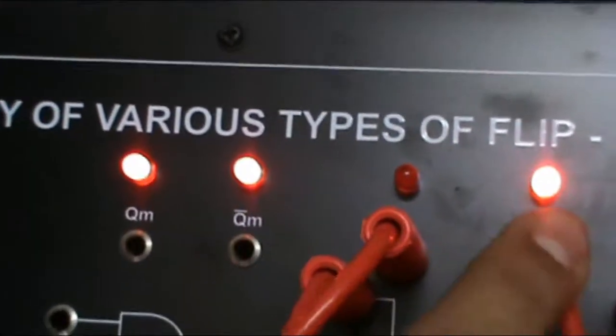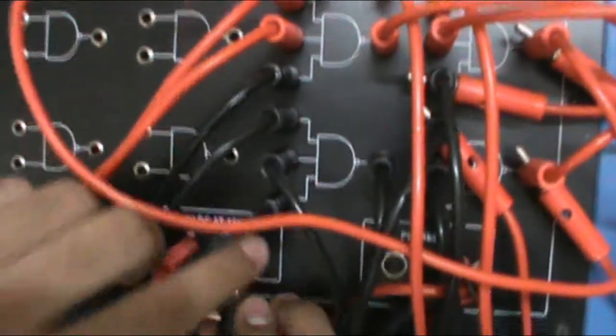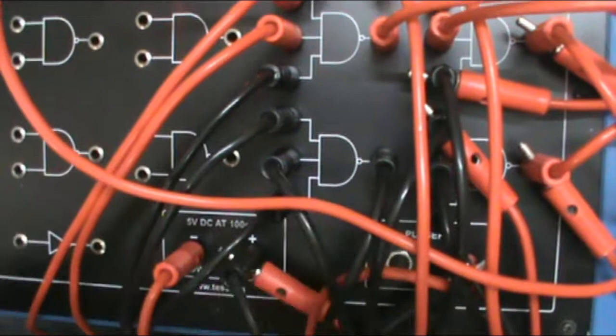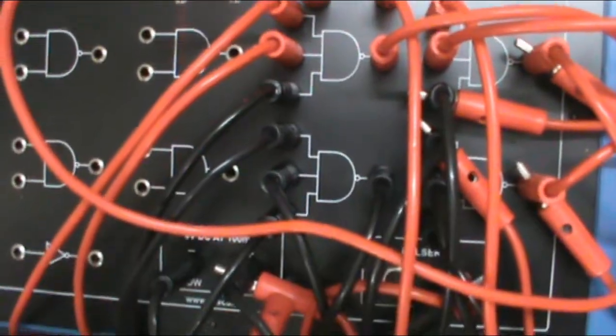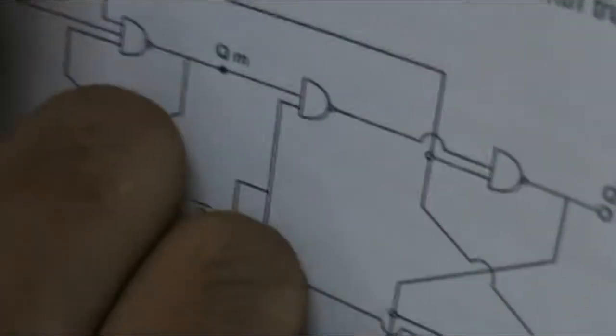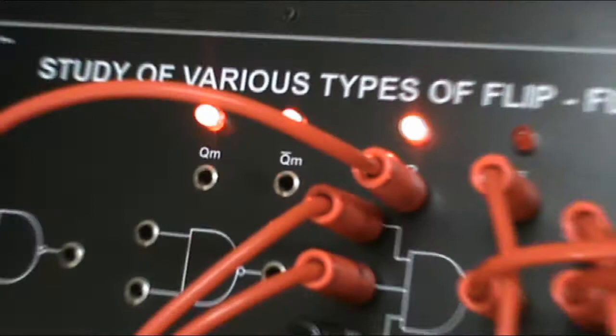As you can see, Q is 0 and Q-bar is 1. If I reverse it — giving 1 to J and 0 to K — as I give the clock pulse, my output will be 1, 0, as you can see in this table. Similarly, take all the readings according to the table given in the manual and perform this experiment to get the desired results.